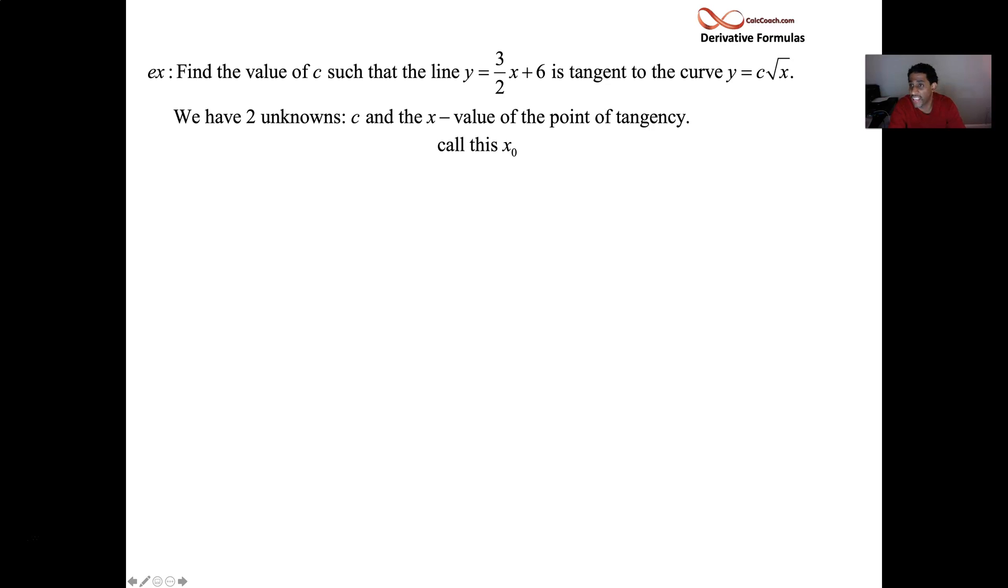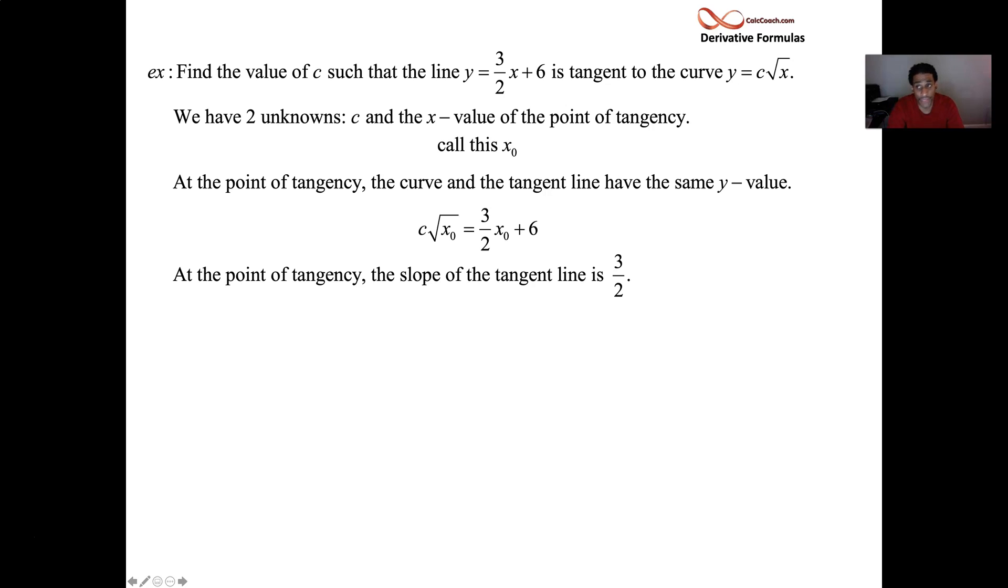What's so special about this line? Its slope is the derivative. So if your function is y = c√x, then we have to find the value of c, but we also have to find the point of tangency at the same time, the x value of the point of tangency. So at this point of tangency, let's call it x₀, with the associated y₀ that goes along with it. At the point of tangency, the curve and the line coincide. They are the same.